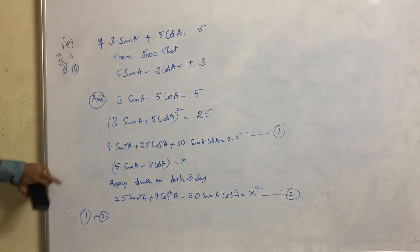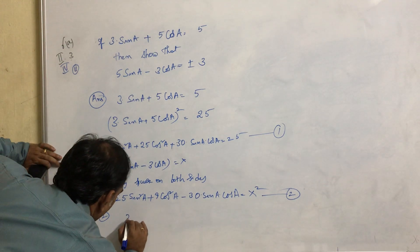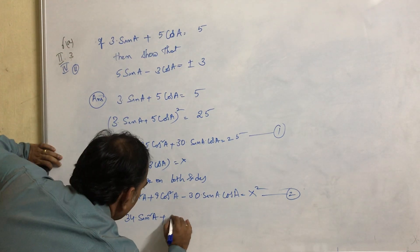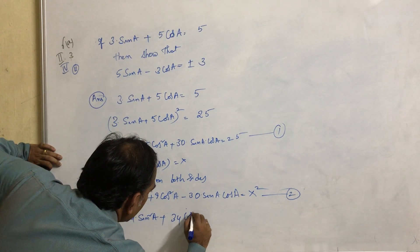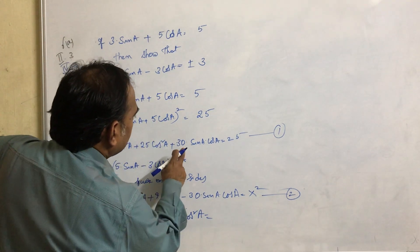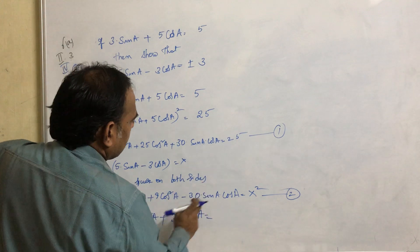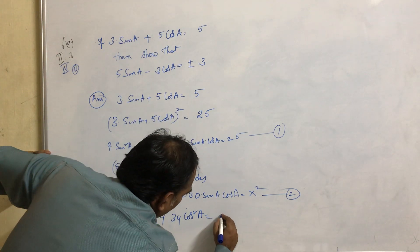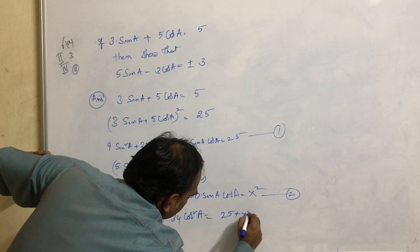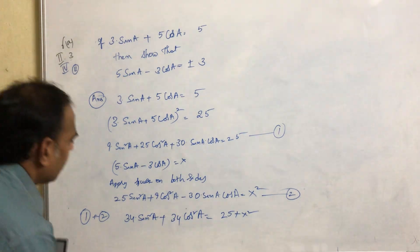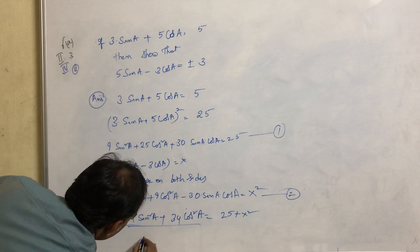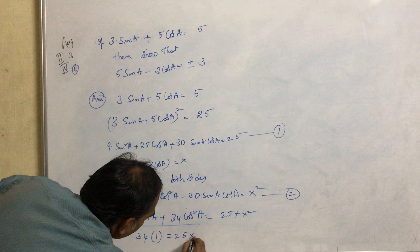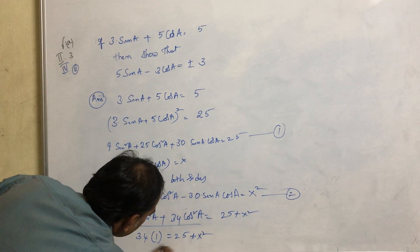Just add equation 1 plus equation 2. If we add 1 plus 2, we get 34sin²A plus 34cos²A, and the plus 30sinAcosA and minus 30sinAcosA get cancelled. This equals 25 plus X². If you take 34 common, using sin²A plus cos²A equals 1, we get 34 into 1 equals 25 plus X².